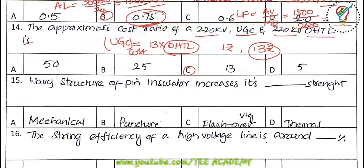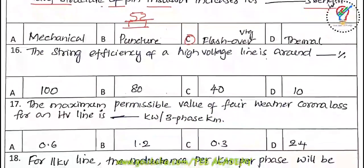Fifteenth question: the wavy structure of a pin insulator increases its flashover voltage. So option C is the right answer.